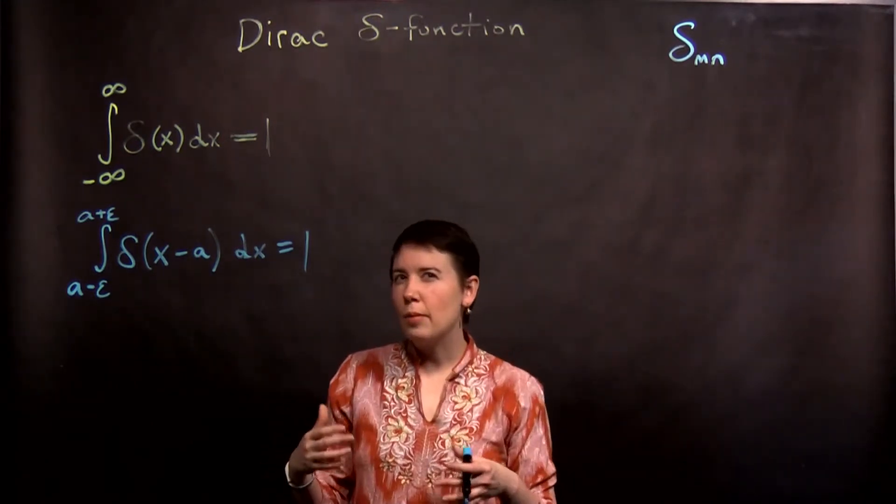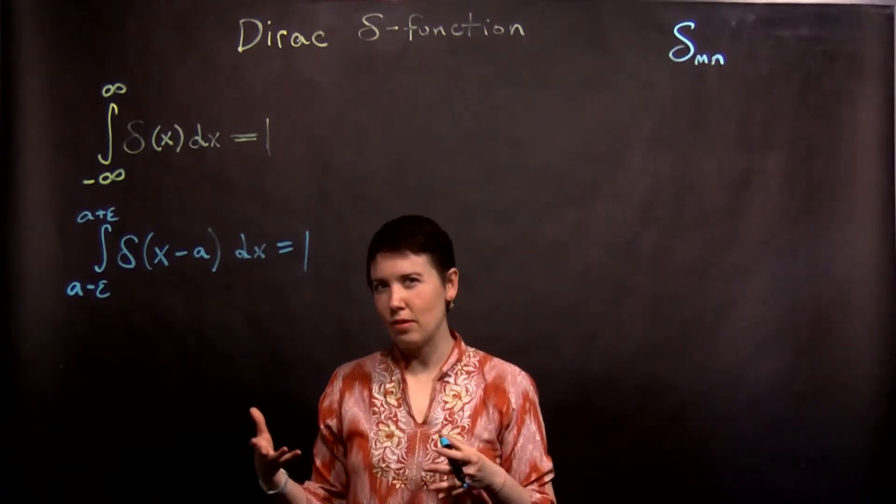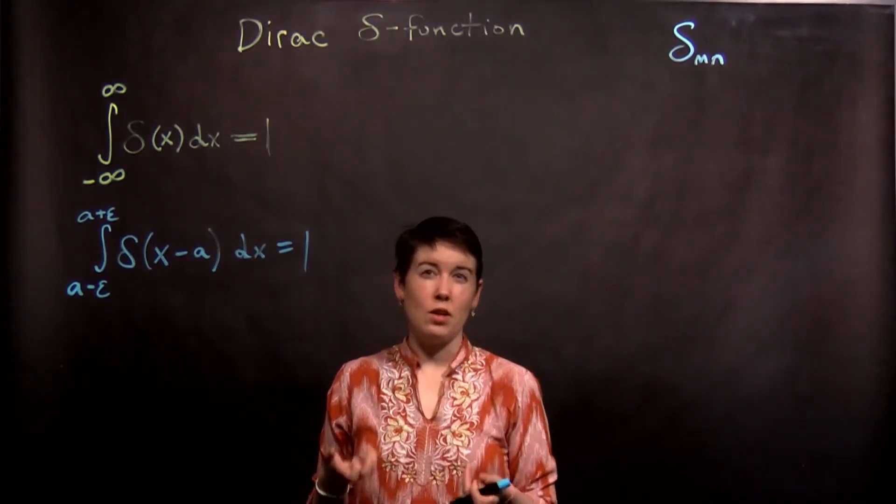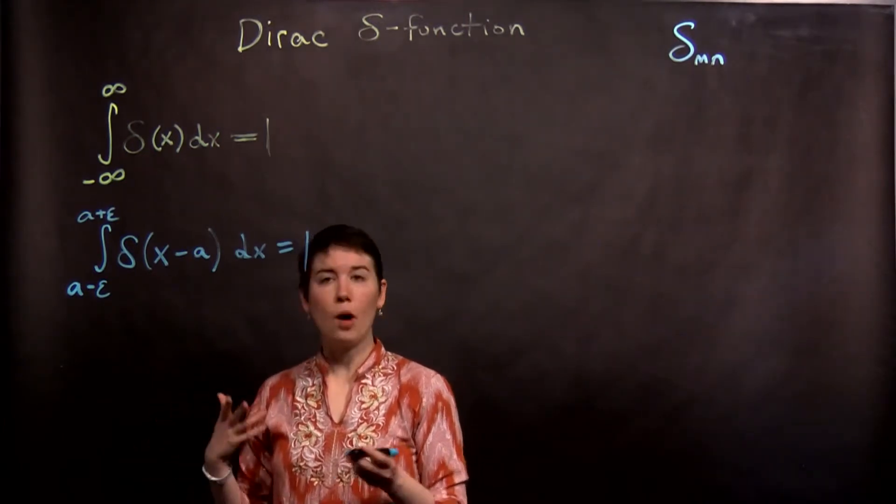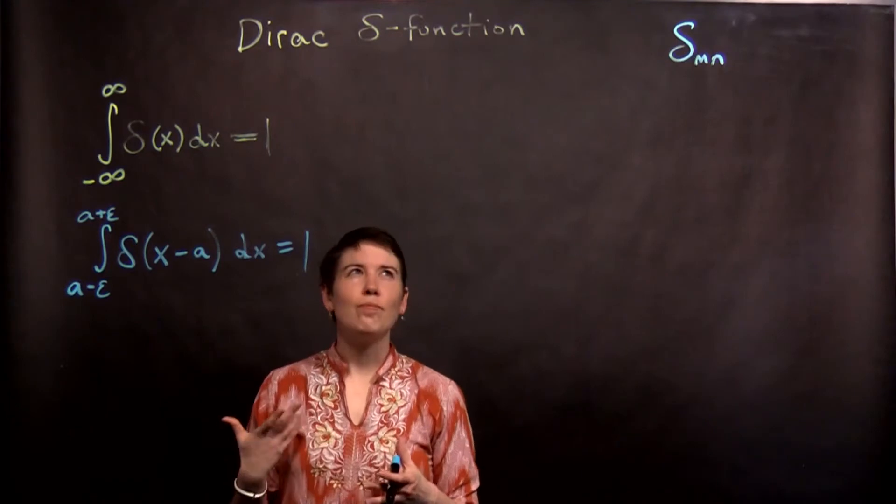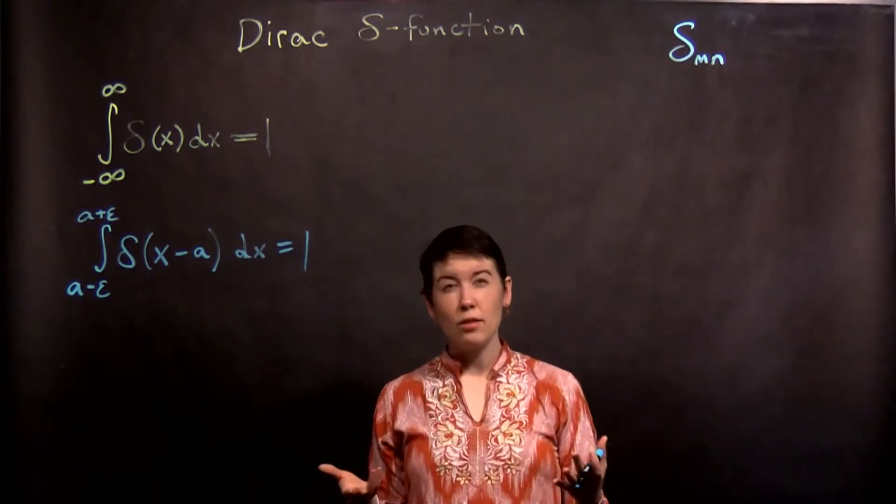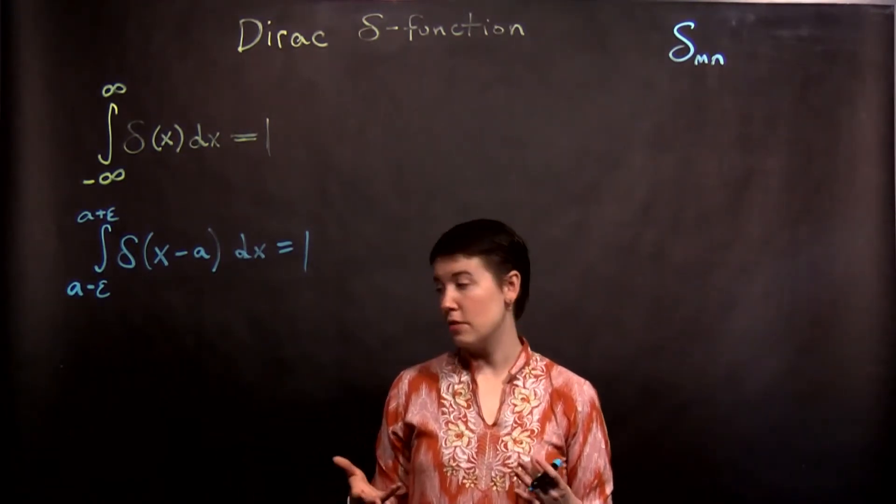We can qualitatively talk about it as like an infinite spike at a given value. That's not actually very helpful on its own. So there's a couple of identities around it. This might be something you've encountered in other math classes before. It is something that comes up in physics a lot.